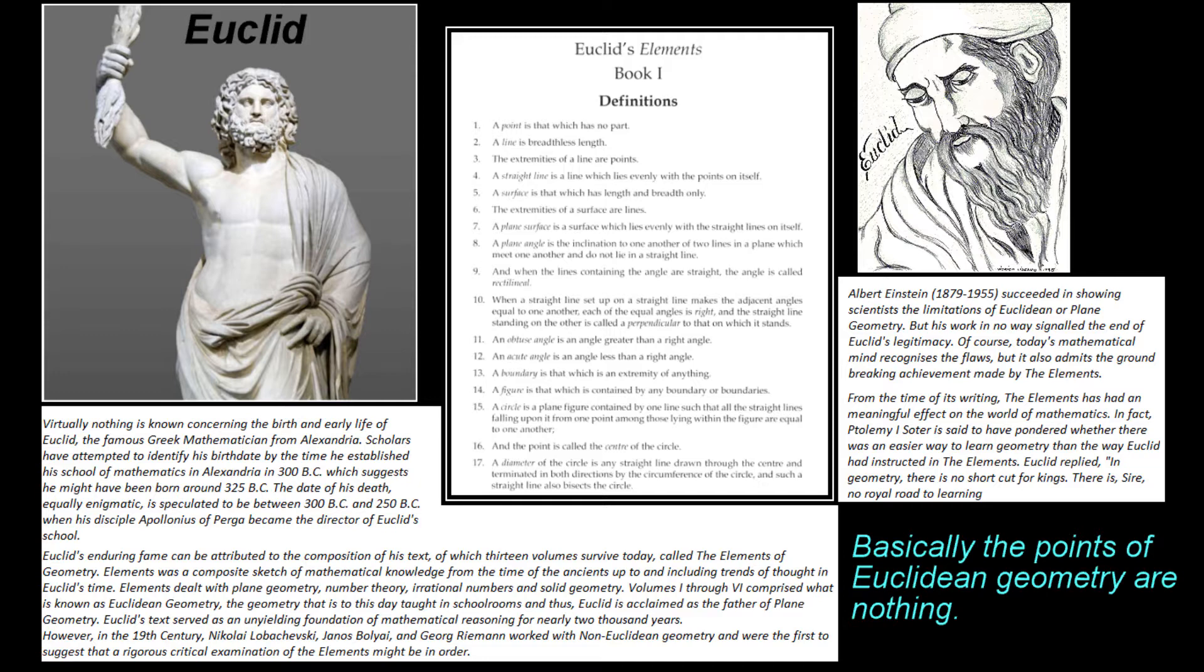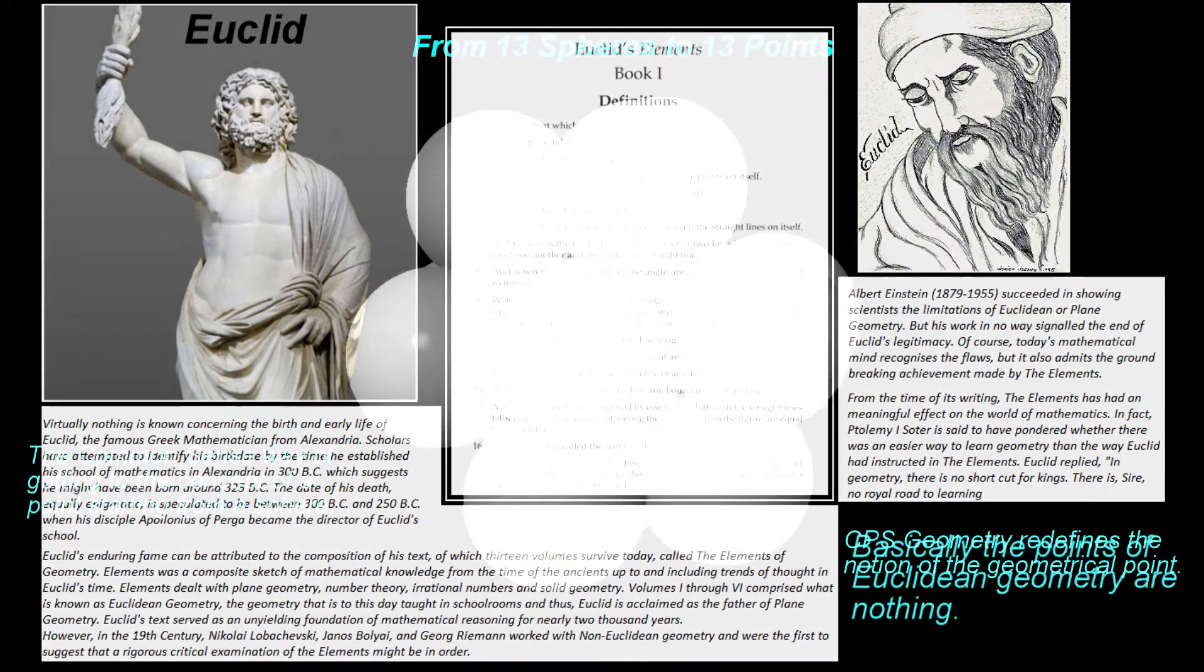Euclidean geometry starts with the introduction of the notion of the point as its basic entity, and in a way its most fundamental one. The point is considered to be something without dimensions, with no shape, with no features, and without any attributes. Basically the geometrical points of Euclidean geometry are nothing.